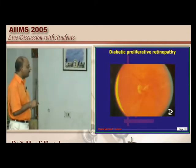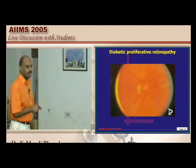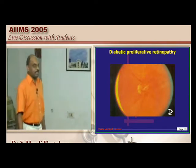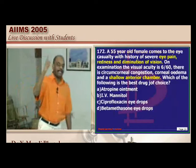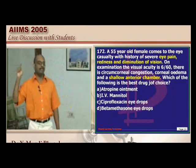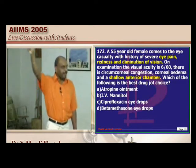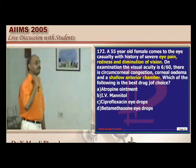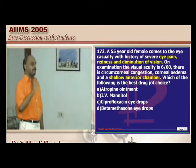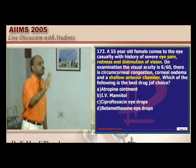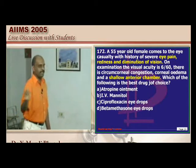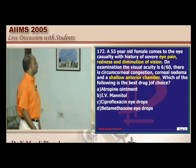A fundus without papilledema showing neovascularization is an example of diabetic proliferative retinopathy. Diabetics can be affected by macular edema or proliferative retinopathy — screen every diabetic after at least 2–3 years in type 2 and more than 5 years in type 1.